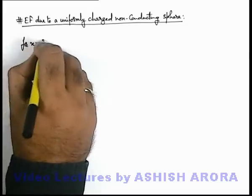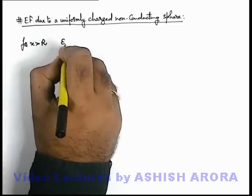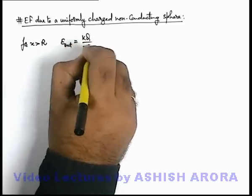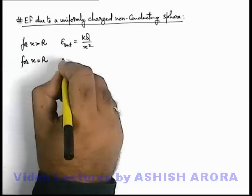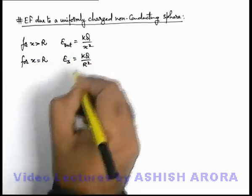For x greater than R, the radius of sphere, electric field in the outer region can be written as kq by x square. And for x equal to R, electric field on the surface can be written as kq by R square.